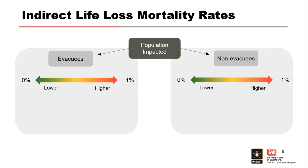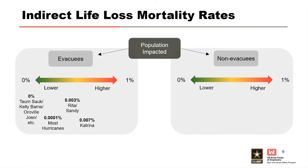Based on the data we were able to gather, we broke the impacted population — which we call IPAR, impacted population at risk — into two groups: evacuees and non-evacuees. We included situations where we had good data, including where we didn't see indirect life loss within some of these groups. For the evacuees group, you generally see really small mortality rates because we're talking about really large numbers of people impacted by these events, and as a percentage of that impacted PAR, the proportion of life loss is actually quite low.